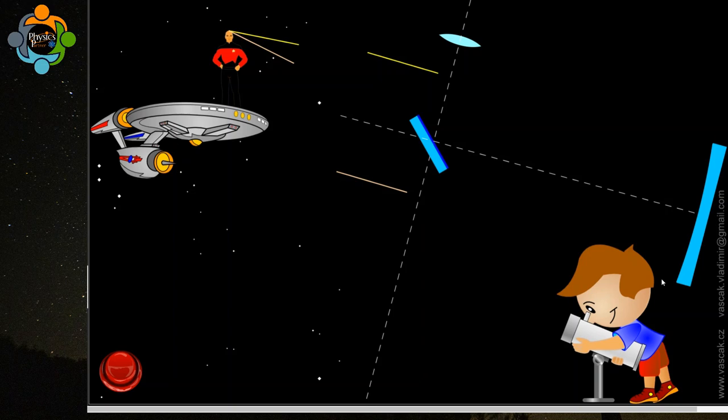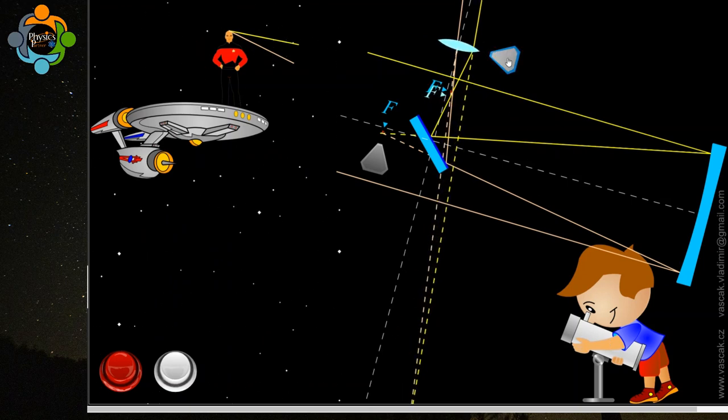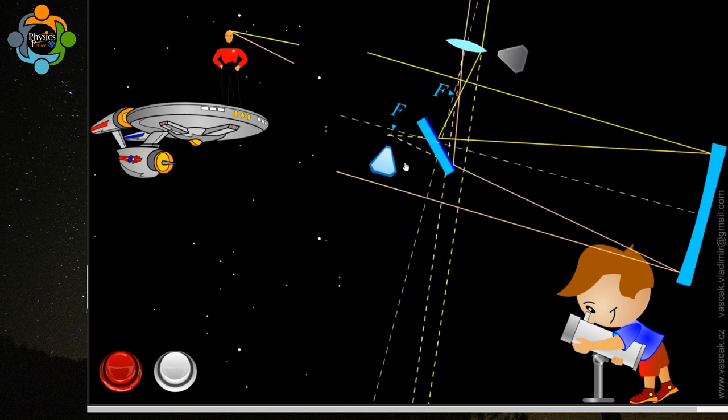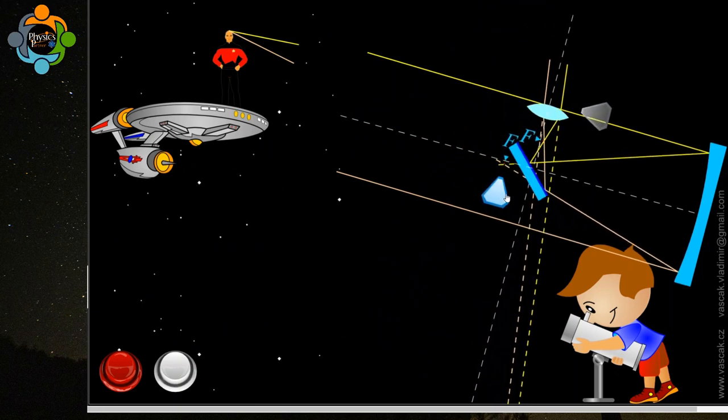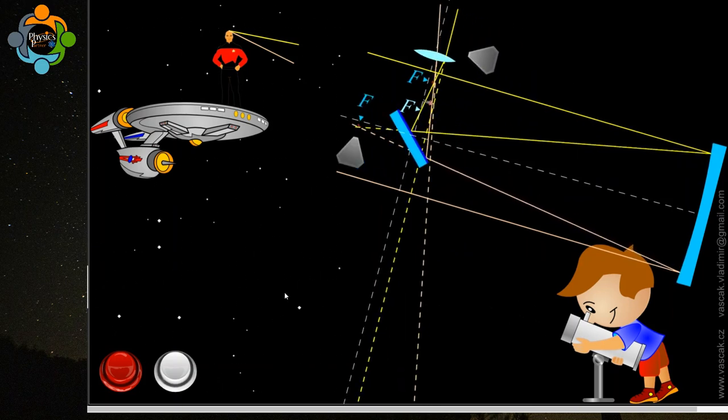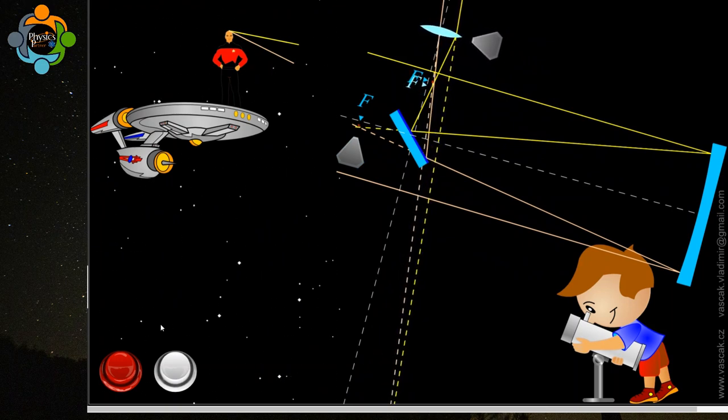The construction of a Newtonian telescope may seem complex, but it follows a relatively simple optical design. The telescope features a primary mirror at the bottom of the tube which reflects light to a secondary mirror angled at 45 degrees. The secondary mirror directs the focused light to the eyepiece, allowing for clear and detailed observations.